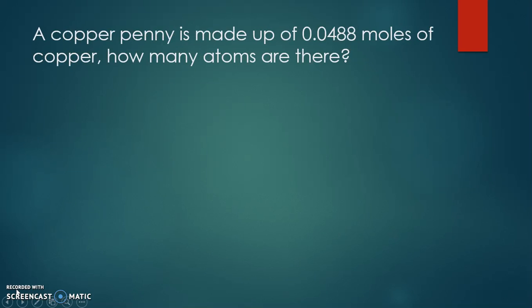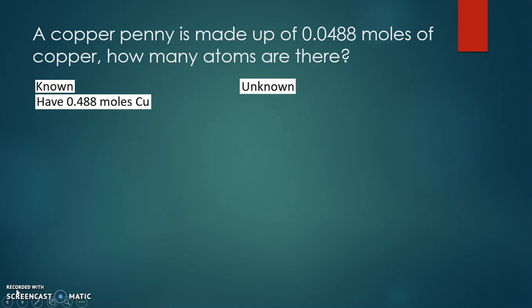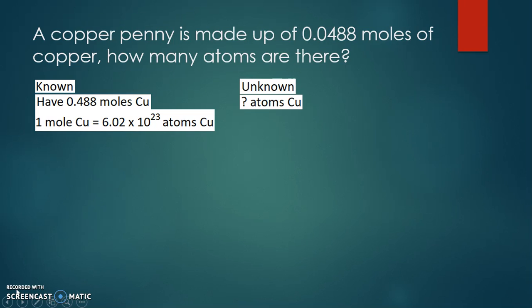Now we look at a copper penny made up of 0.0488 moles of copper. How many atoms of copper are there? We know there are 0.0488 moles of copper but we don't know how many atoms. To relate moles to atoms, we use Avogadro's number: one mole of anything equals 6.02 times 10 to the 23rd of it. Since copper is an element, one mole of copper equals 6.02 times 10 to the 23rd atoms of copper.